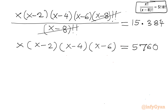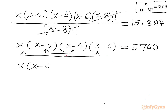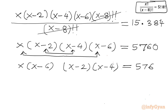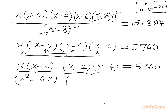Now I will consider x and x minus 6 together, and x minus 2 and x minus 4 together. So let us write x times x minus 6, then x minus 2 times x minus 4, and multiply these two products. That gives x squared minus 6x, times x squared minus 6x plus 8, equal to 5760.